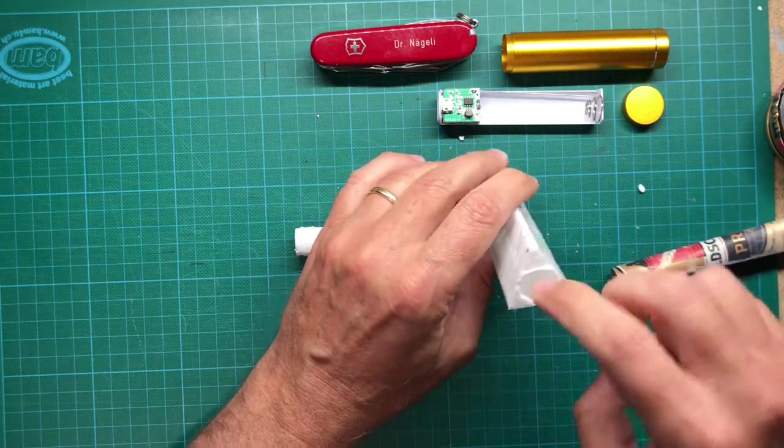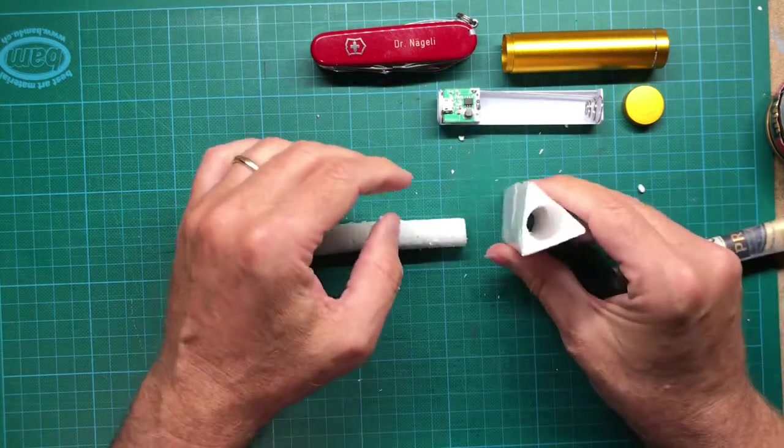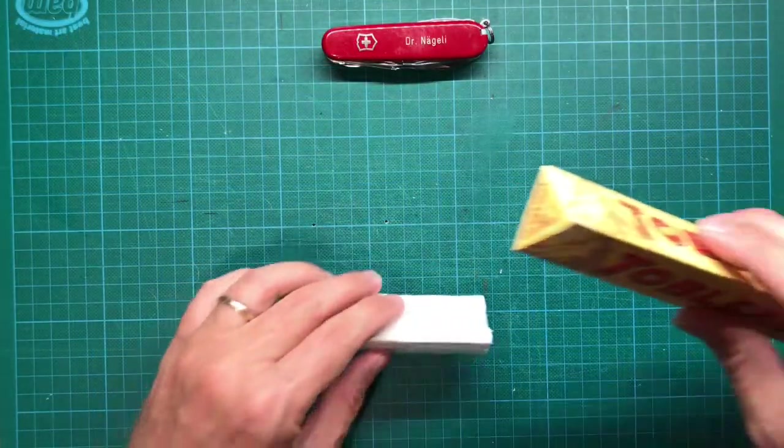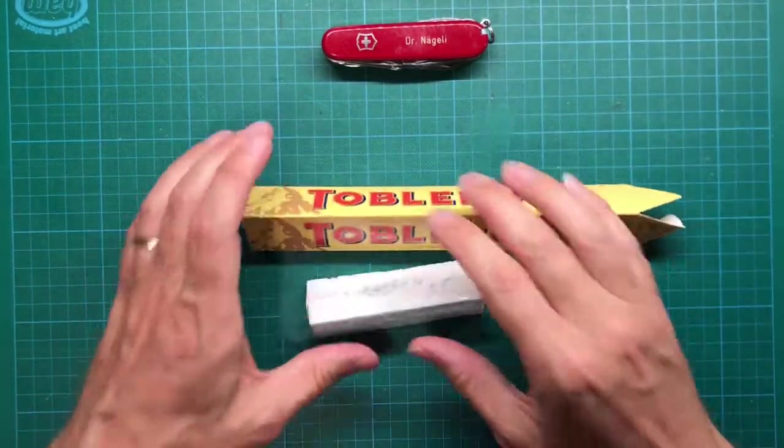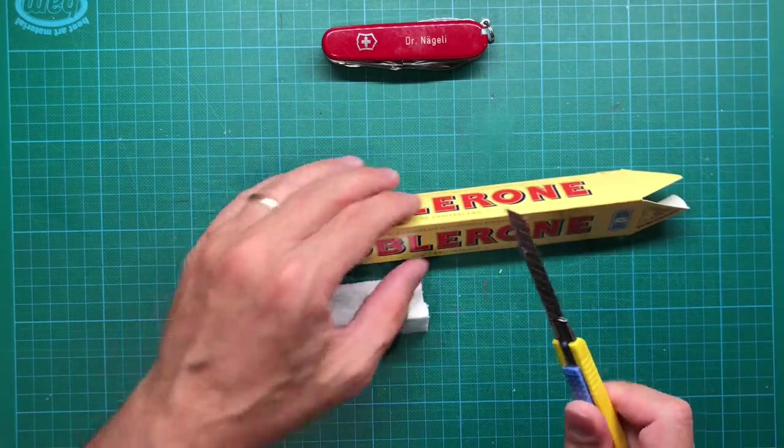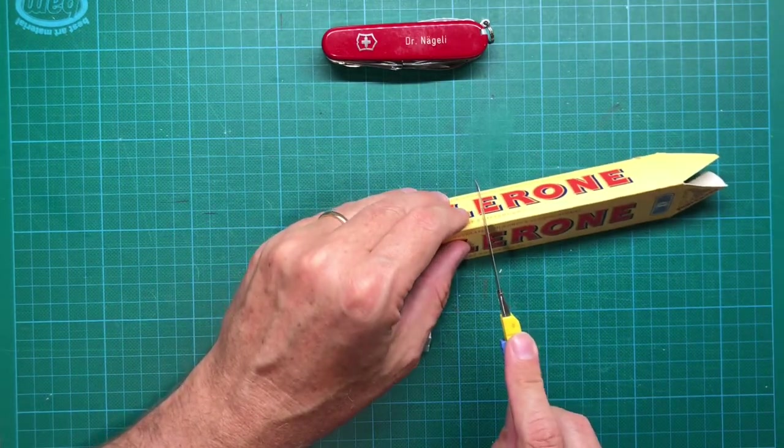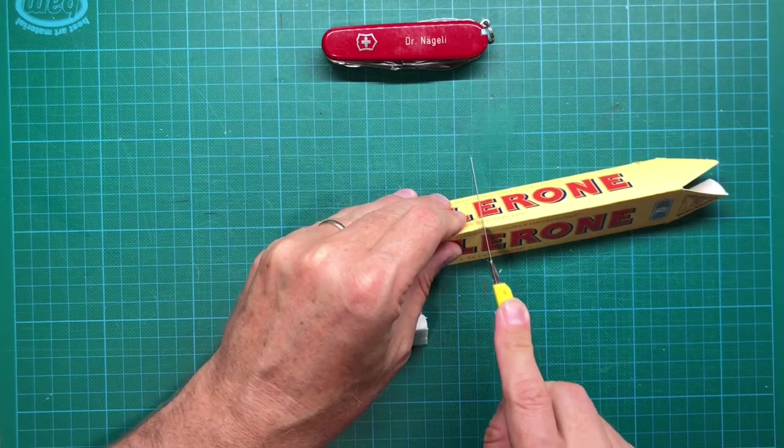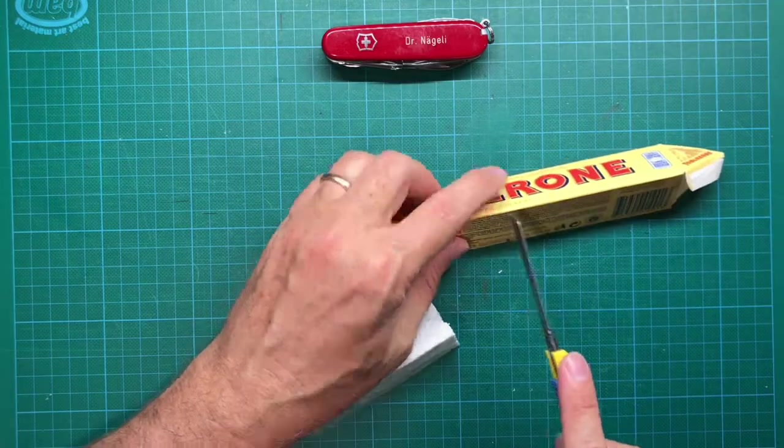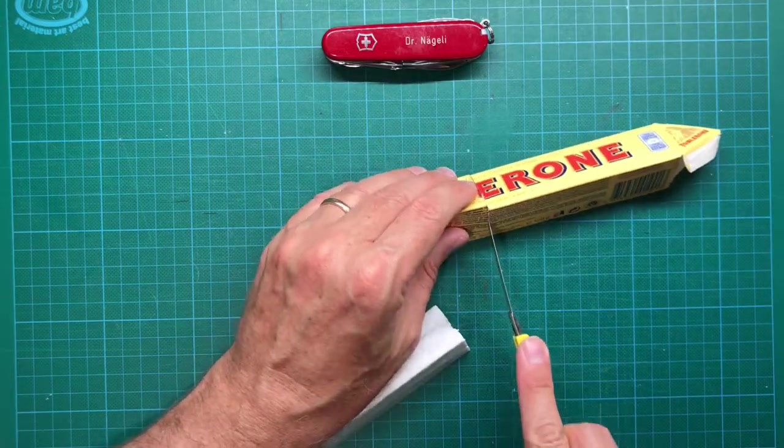Just enter your power bank with the battery into the styrofoam block. If you want to make the version with only one power bank you just have to cut the chocolate envelope to the desired size.